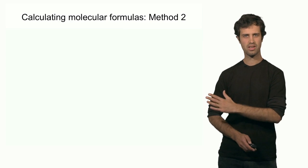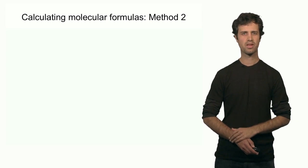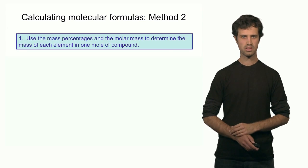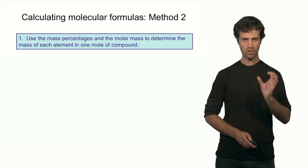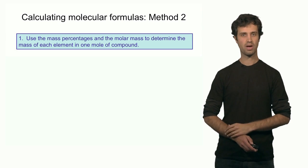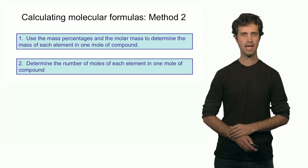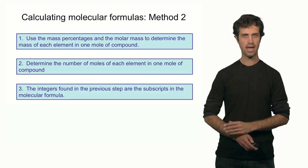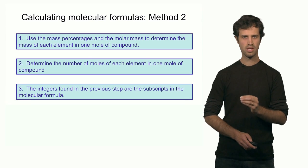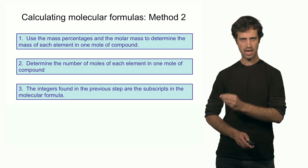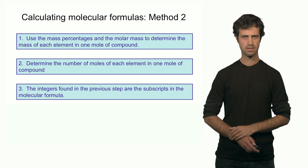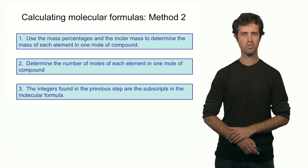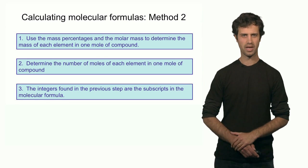So this method — a somewhat quicker method — works as follows: assume 1 mole of the compound, determine the grams of each element in that 1 mole, then convert those grams into moles. The number of moles of each element is the subscript in the molecular formula. This method is generally a little quicker, but you should be able to use both methods to determine the molecular formula.